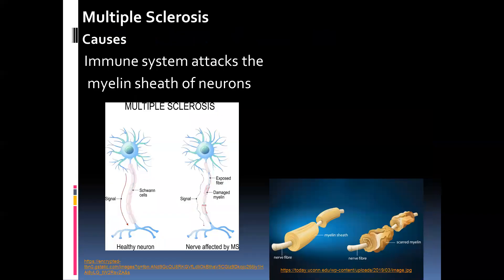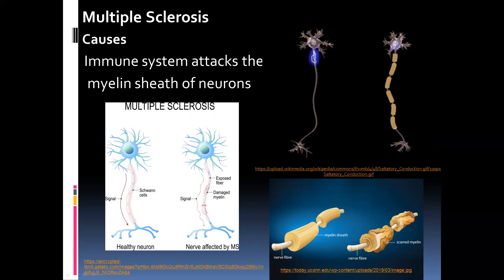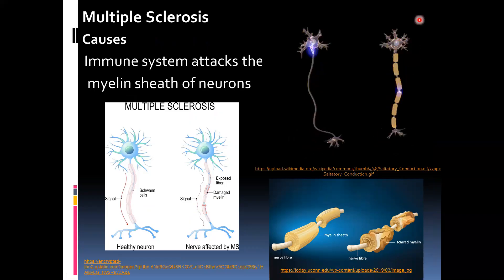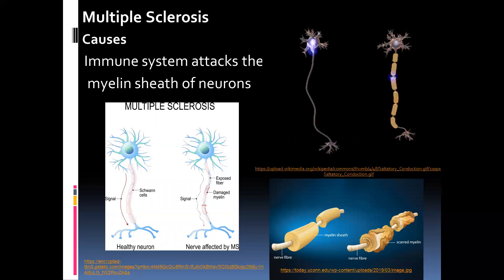Multiple sclerosis is caused when the immune system attacks the myelin sheaths of neurons — this is what we call an autoimmune disease, where a person's immune system attacks their own cells. The myelin sheath covers the axon and some dendrites, and when it is damaged, impulse transmission is affected. A myelinated neuron carries impulses very quickly, but one without the myelin sheath has difficulty transmitting impulses.